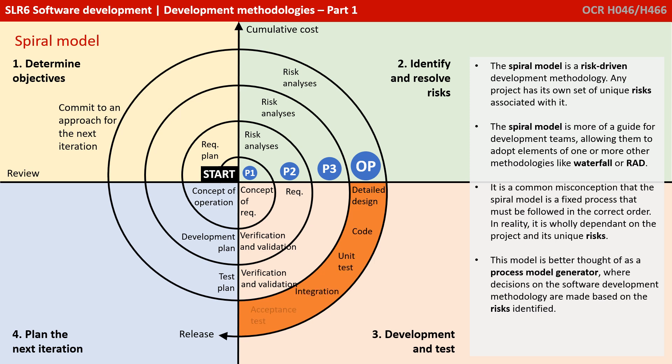It is only at this stage that we actually enter the main part of development and testing. We now have a detailed operational prototype — we can do a proper design, code, unit test it, integrate it, get it accepted by the user, and finally release it. Although this model looks quite complex, the important thing to remember for the exam is that the spiral model is a risk-driven development process.